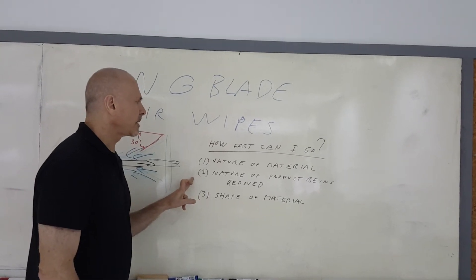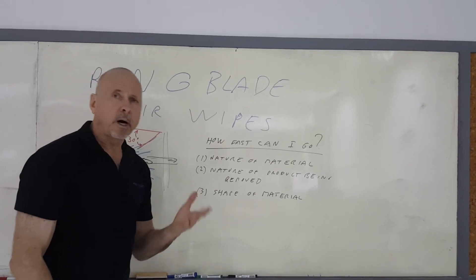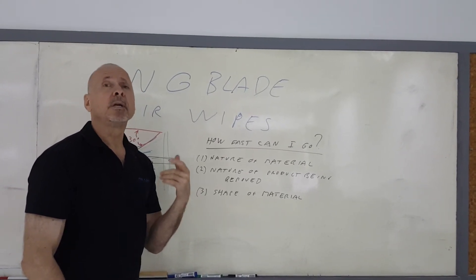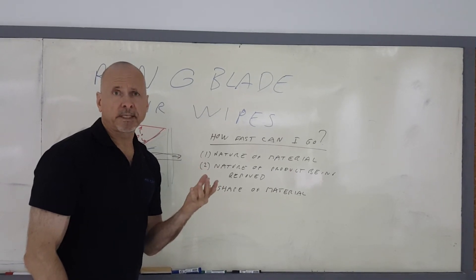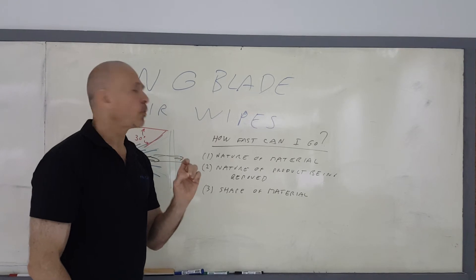What is the nature of the product being removed on the extruded material? Is it water? Is it oil? Is it something sticky or something that's very easily blown off with low surface tension? So it depends on what you're trying to blow off the material as well.